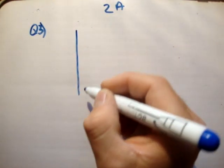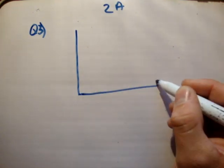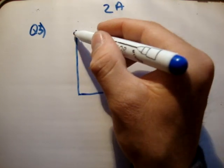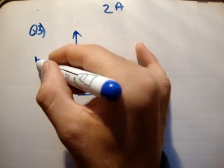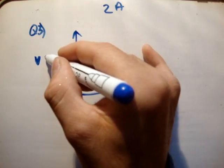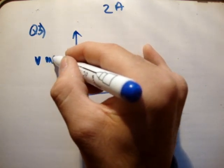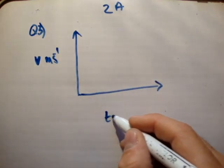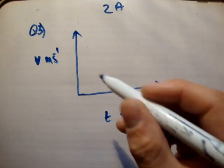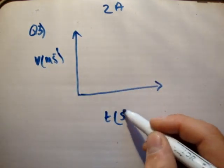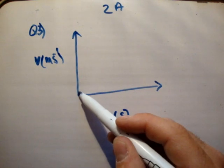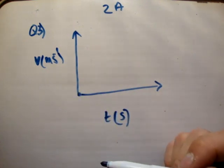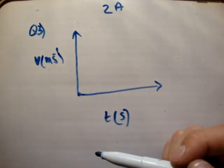The first thing we do as normal is draw our speed-time graph. Remember, you say what's on the y-axis first. So this is speed — it's not velocity because it's not a vector — it's measured in meters per second, and we have time measured in seconds. The car starts from rest, so its initial point at time t equals 0 is at the origin.